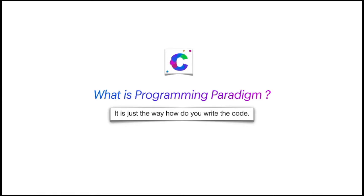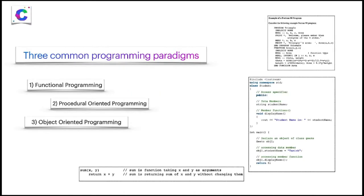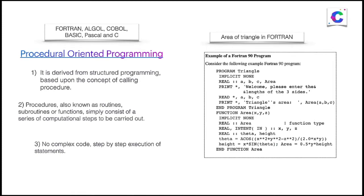What is a programming paradigm? It is simply the way of how you write the code. The most common programming paradigms available in the industry are functional programming, procedural oriented programming, and object oriented programming. C is a procedural oriented language, while C++, Java, and Python are object oriented. F-sharp, Scala, and Erlang are functional programming languages.